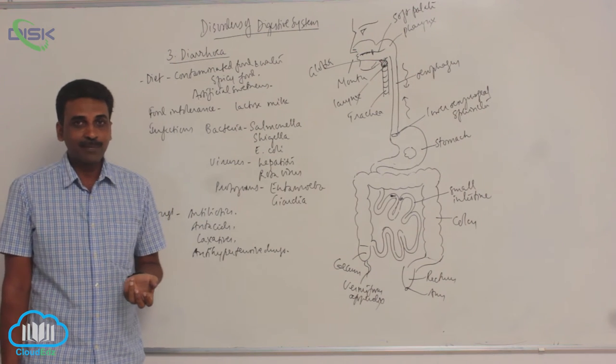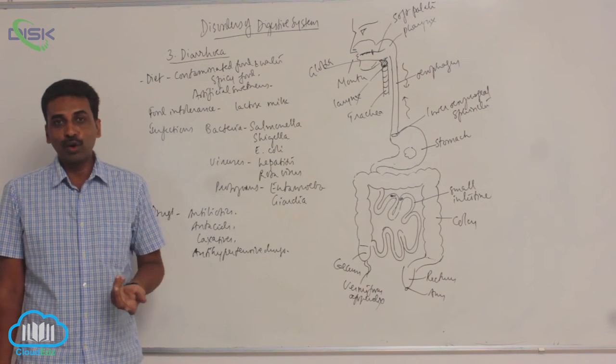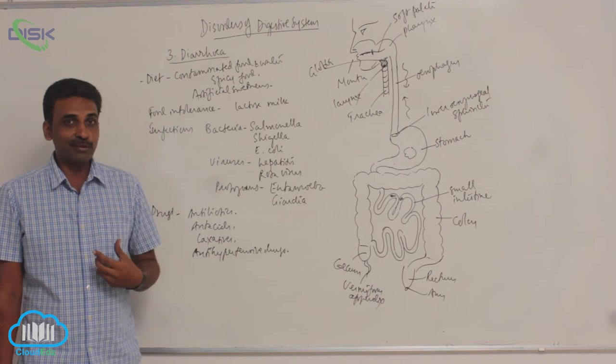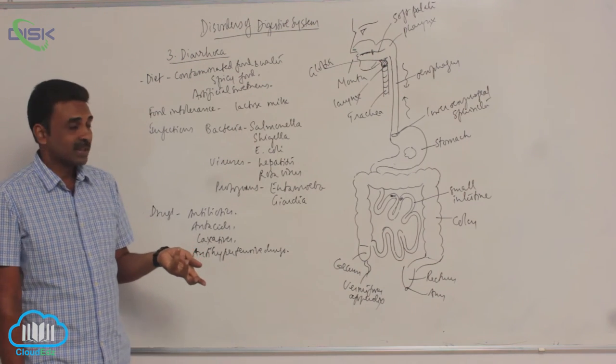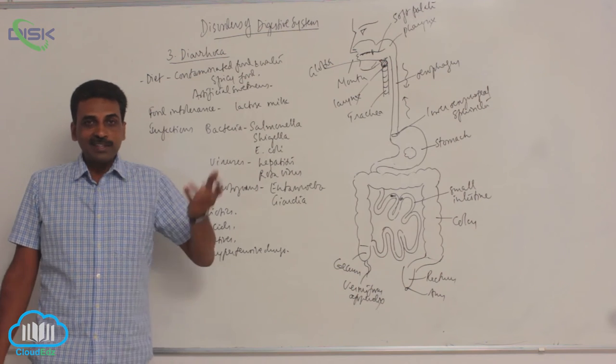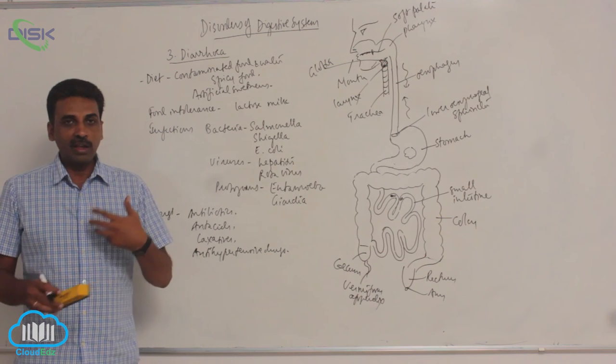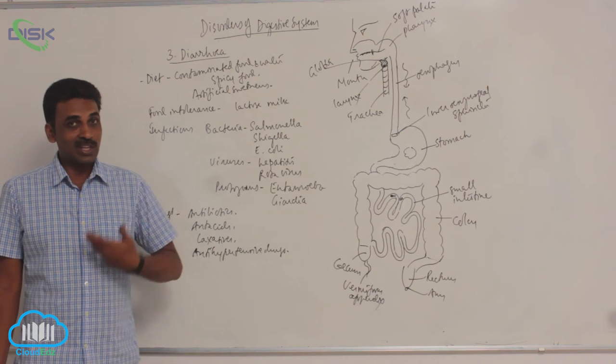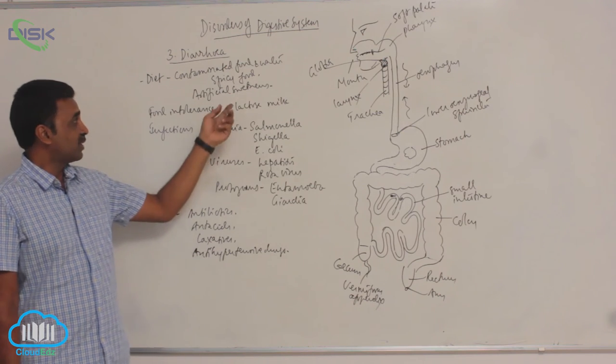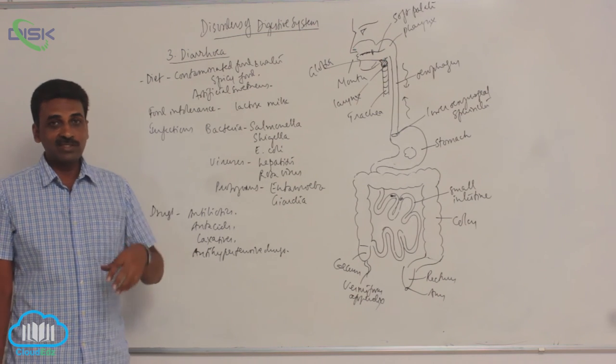Acute conditions can be because of diet. So we have gone outside, we have taken contaminated food and water. Under that condition there is diarrhea. Spicy food, in some cases we have taken a lot of spicy food, we are not able to digest it, so there is a lot of spicy food and diarrhea, loose motions are there.